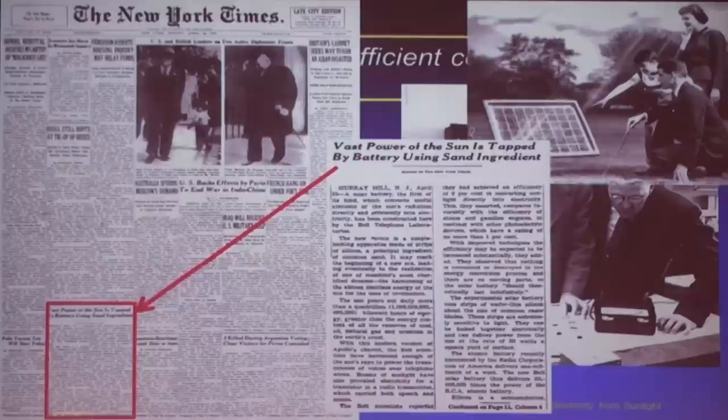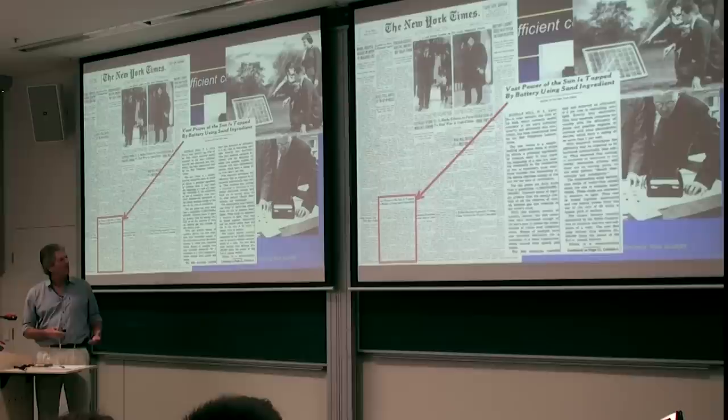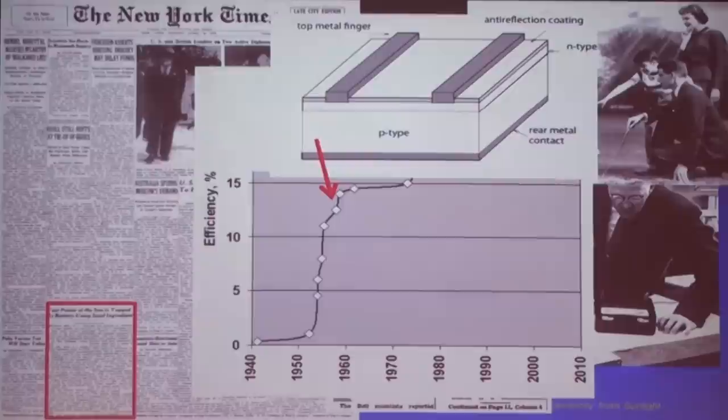Bell Labs started investigating what they could do with them, making little modules very quickly. It caused a fair bit of excitement because this was the first sunlight converter able to demonstrate practical types of efficiency. Bell Labs proposed a lot of applications, but the cells were too difficult and expensive to make at that time for anything but a very specialised application — space cells. By 1958, the first cells were being used in space.